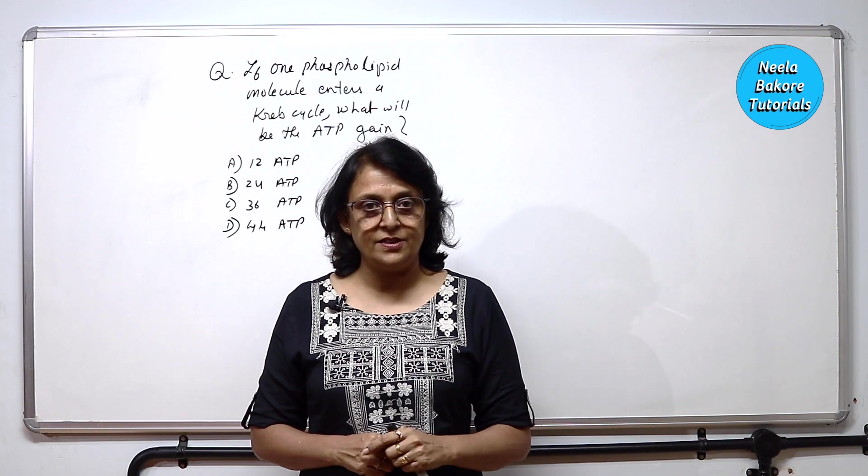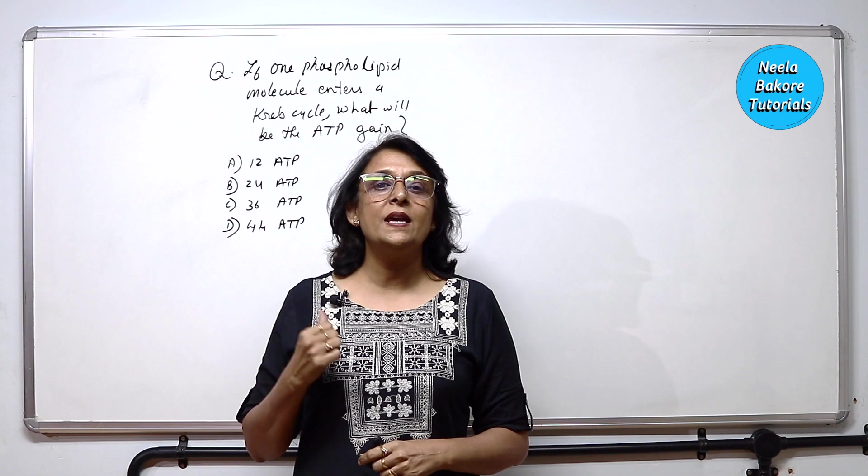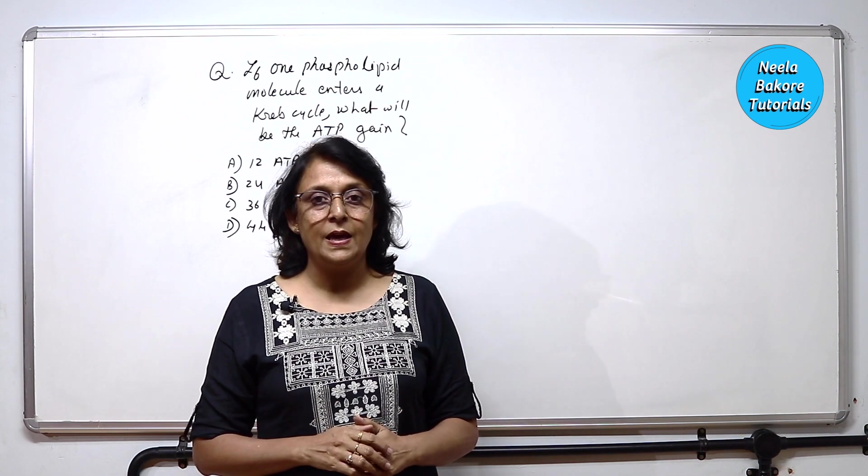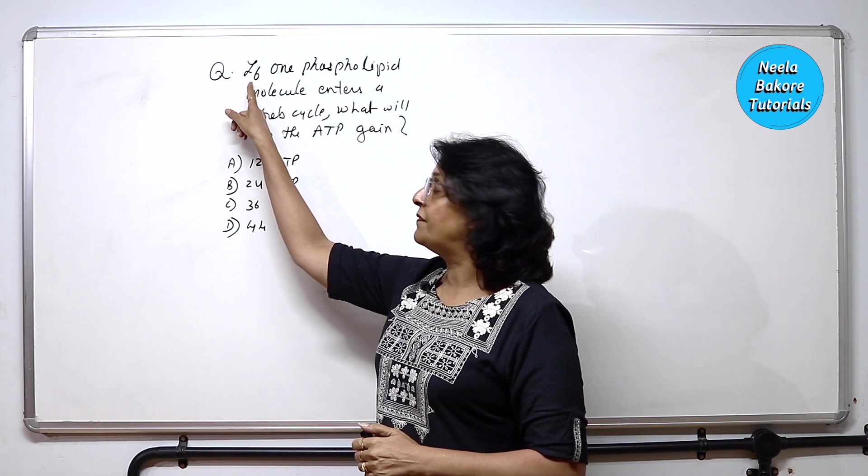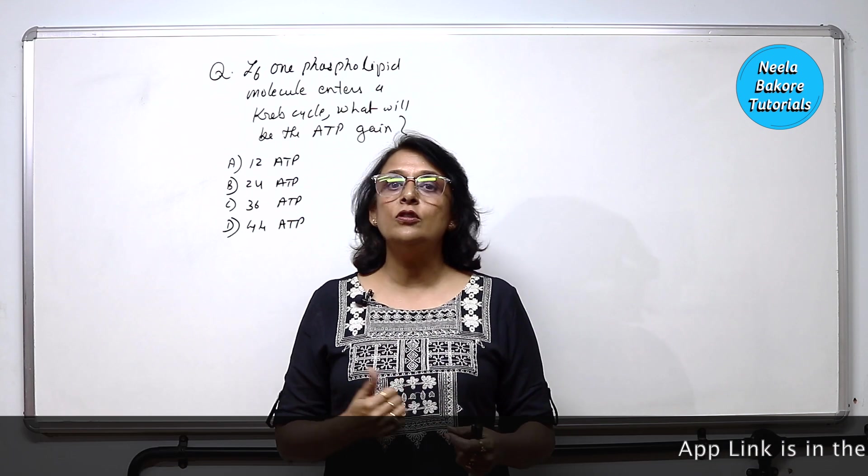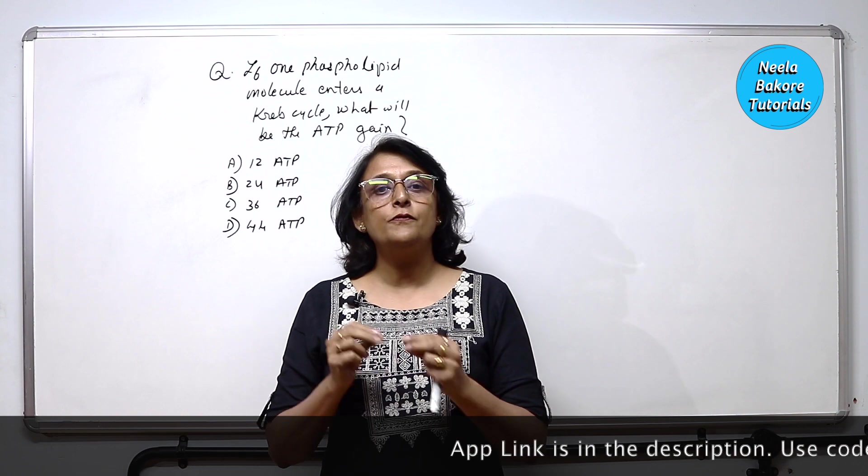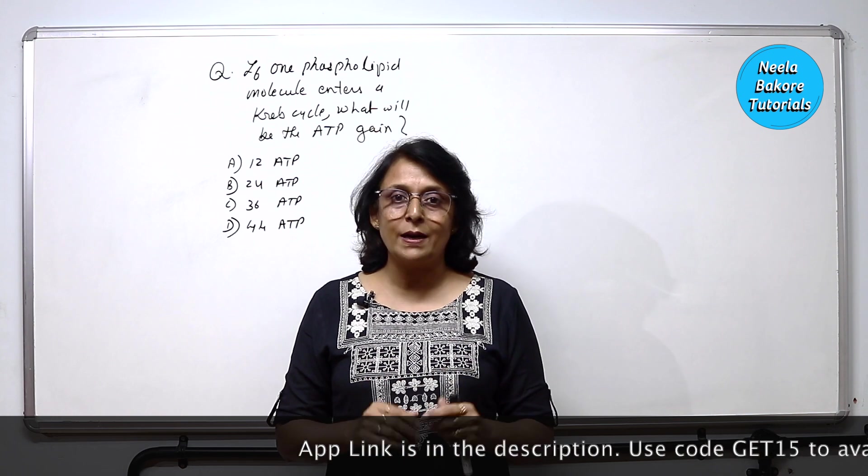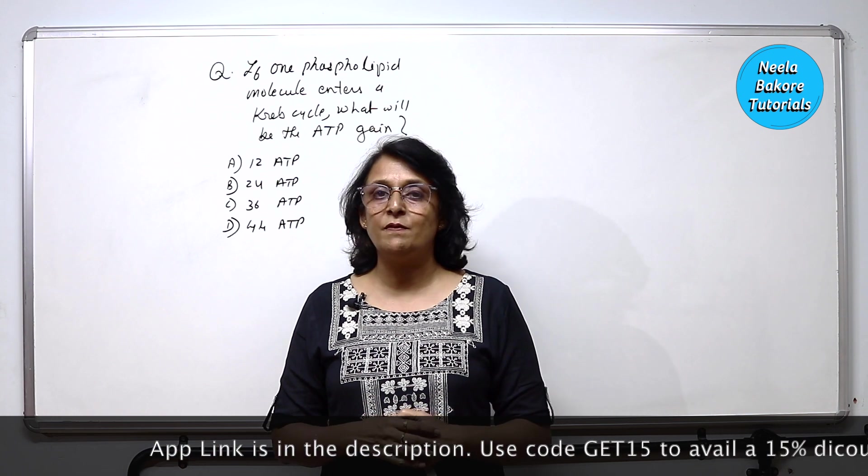I am going to tell you what is the correct answer. This question is based on Krebs cycle and it starts with if. If means if this happens, this is not the normal process. So if a phospholipid enters into Krebs cycle, then how many ATPs will we get?